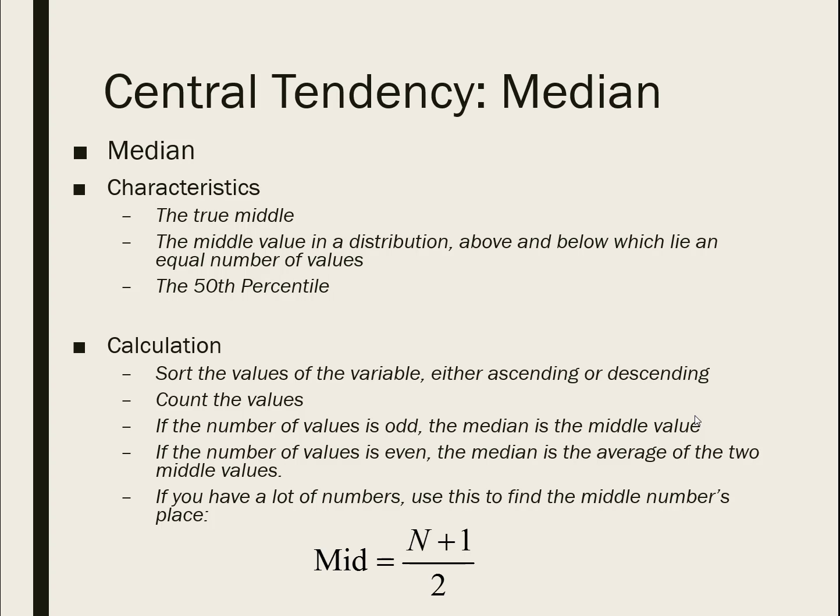If you have a perfectly symmetrical normal distribution, the value of the median and the mean would be the same number. The way the median works is that you sort all values of a variable from smallest to largest or largest to smallest, count the number of observations, and find the exact middle value. If you have an odd number of values, it's pretty easy. But if the number of values is even, it's the average of those two middle numbers.